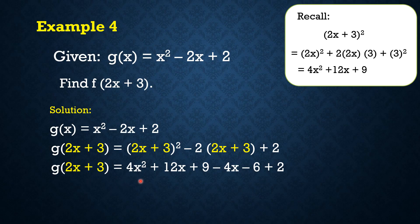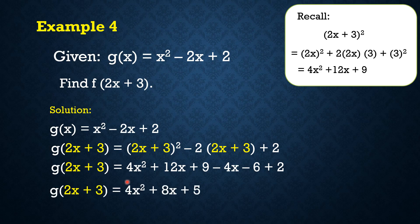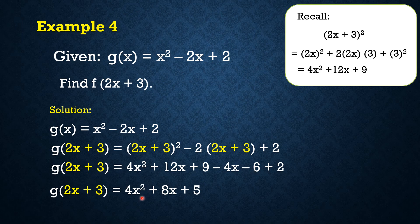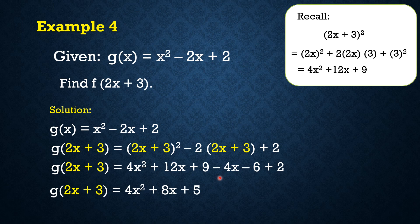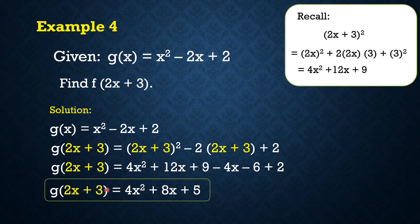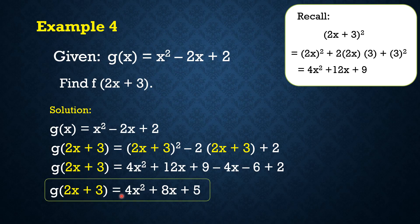So by combining similar terms, you can see na si 4x² ay ibababa lang natin dito, kasi wala na ibang x² term dito sa ating expression sa taas. And then here, we have 12x and then negative 4x, pwede natin i-combine, and that gives us positive 8x, since 12 - 4 = 8. 9 - 6 = 3, and then plus 2 is 5. Therefore, g(2x + 3) = 4x² + 8x + 5.